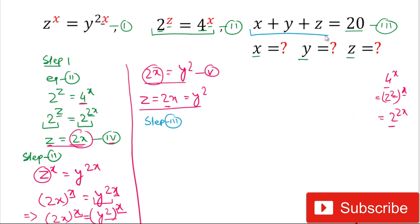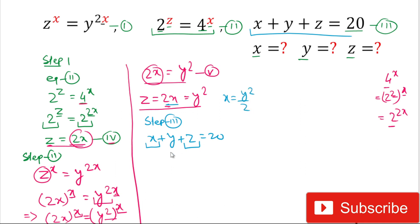In step 3 we use equation 3: x plus y plus z equals 20. We substitute x and z in terms of y. Since 2x equals y squared, x equals y squared divided by 2. And z equals y squared. So the equation becomes y²/2 plus y plus y² equals 20.